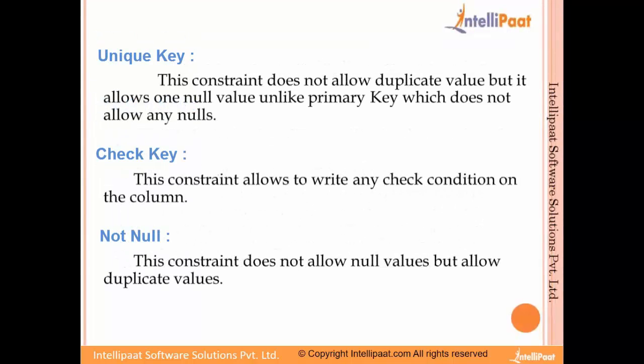The unique key is again a column that remains unique across all rows, similar to serial number. However, there is only one difference between primary key and unique key: a primary key remains unique and does not allow null values, but a unique key has unique values and can contain null — but null can appear only once and will not be repeated.